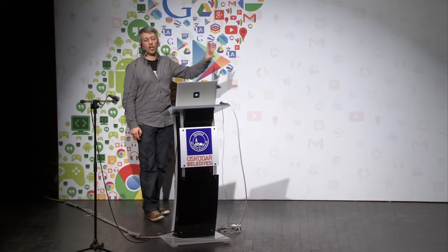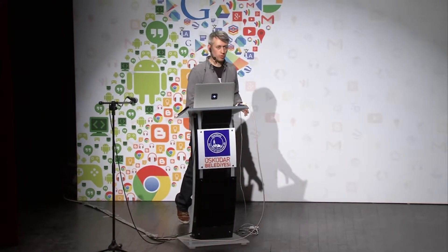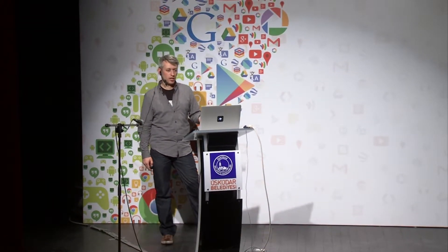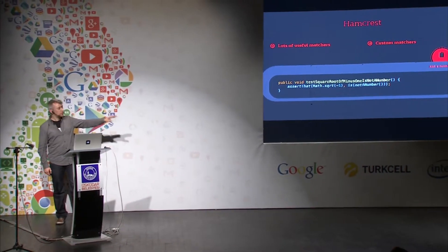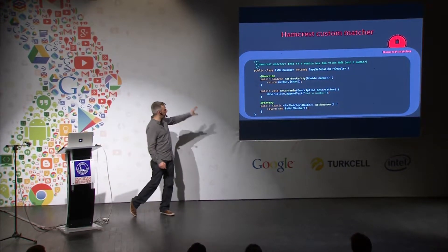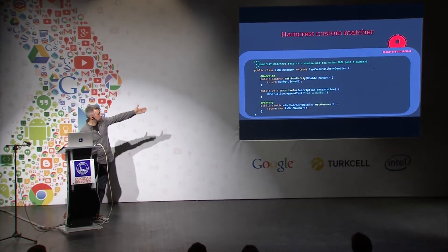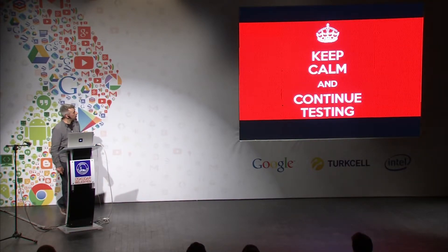Hamcrest has lots of useful matchers, but don't be afraid of writing your own — it's very easy. For example, if you want to write a matcher to make sure the square root of minus one is not a number, you write 'assert that the square root of minus one is not a number.' It's not part of Hamcrest by default, so just write your own. It's a very small class — all the magic is in two lines: basically just calling number.isNaN(). That's how easy it is to write custom Hamcrest matchers.